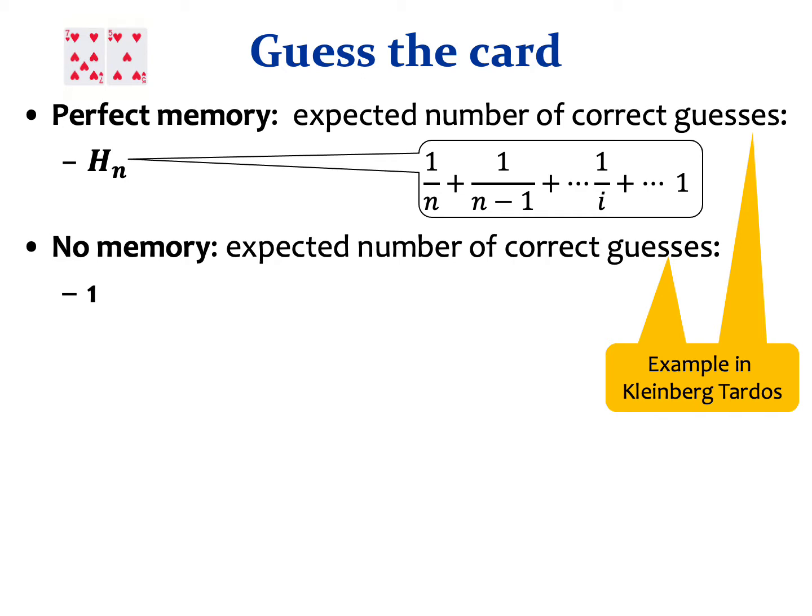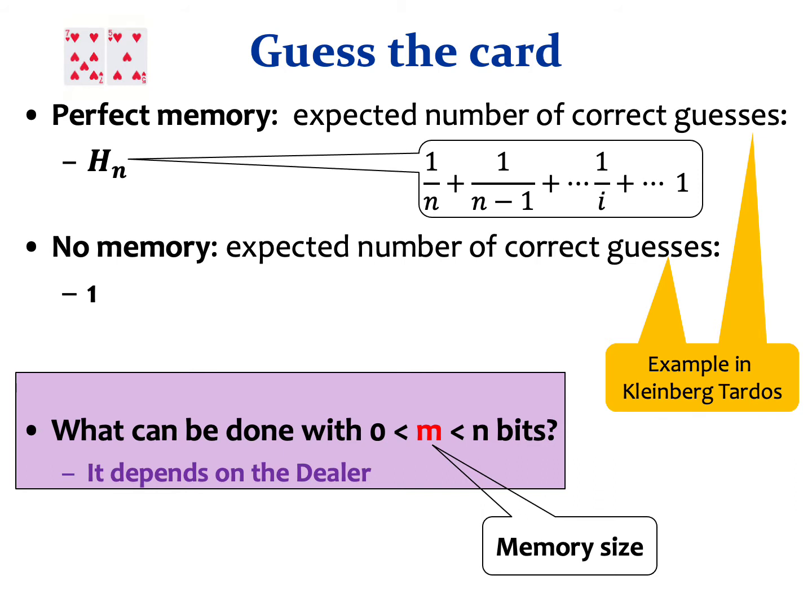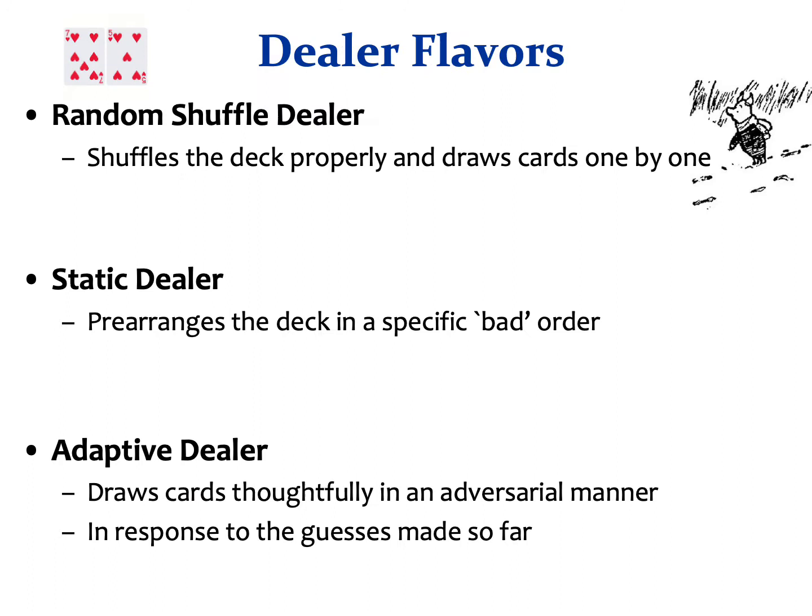These two examples are taken from a textbook on algorithms by Kleinberg and Tardosh. What we are interested in is what can be done with m bits of memory when m is less than n. And our answer is that it depends much on the dealer.